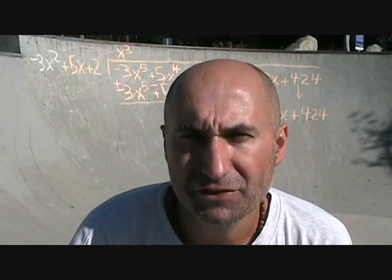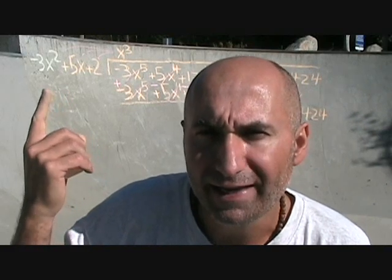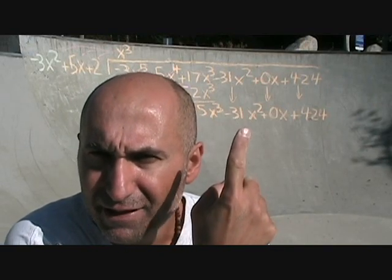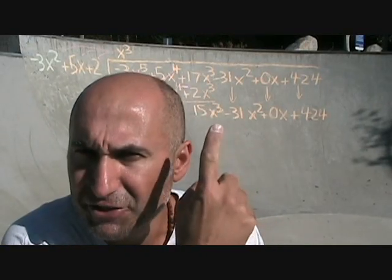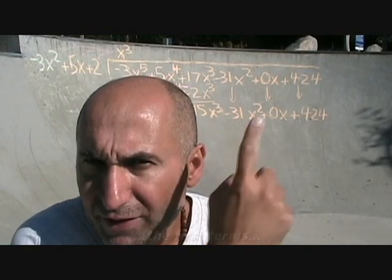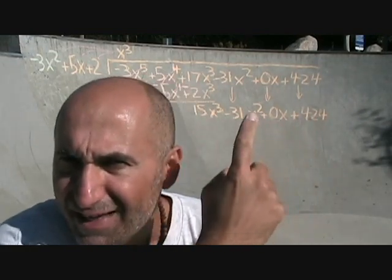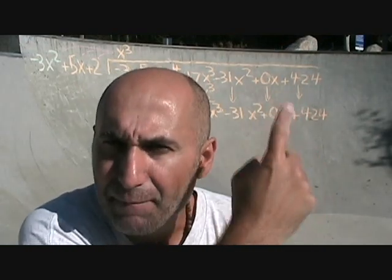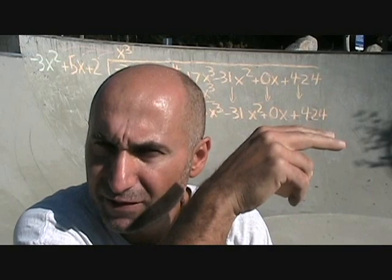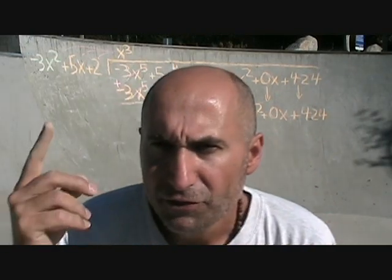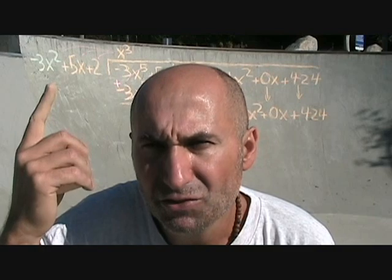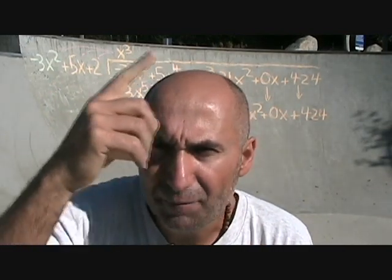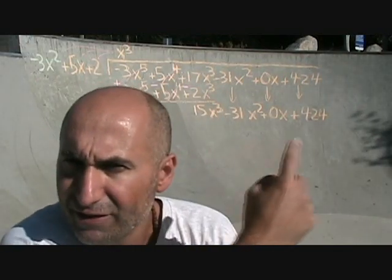The next question is: what are we going to multiply negative 3x² by to give us 15x³? We're only concerned about matching the top numbers. I also brought all the terms down so I don't have to keep looking up and risk making a mistake — I just transfer everything down. So what we multiply negative 3x² by to get 15x³ is negative 5x. That goes up top and multiplies everything out.